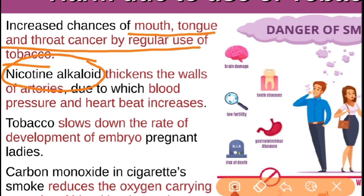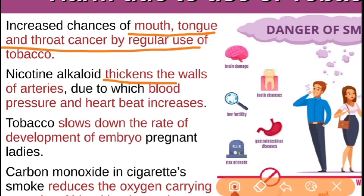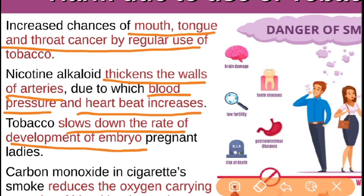When the flexibility of the arteries is reduced, blood pressure increases and the heart is ultimately affected — heartbeat increases, pressure on the heart increases, and it can even lead to a heart attack. Tobacco also slows down the rate of development of the embryo in pregnant ladies. If a pregnant woman is addicted to tobacco, the growth and development of the fetus gets affected, having negative side effects on fetal development.